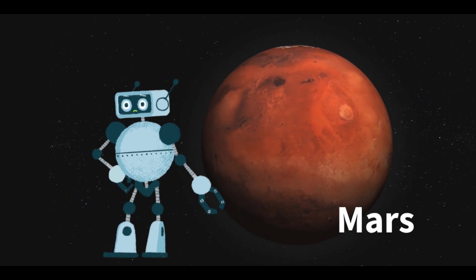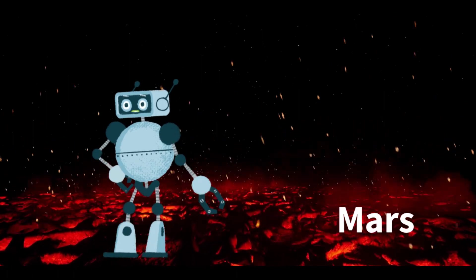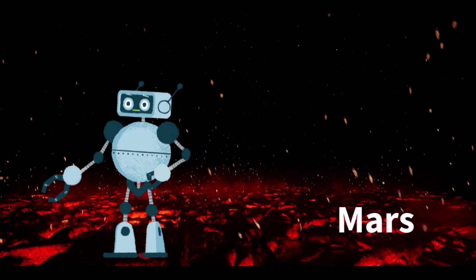Mars' features include the largest volcano, Olympus Mons, and a vast canyon, Valles Marineris. It has a thin atmosphere primarily composed of carbon dioxide.